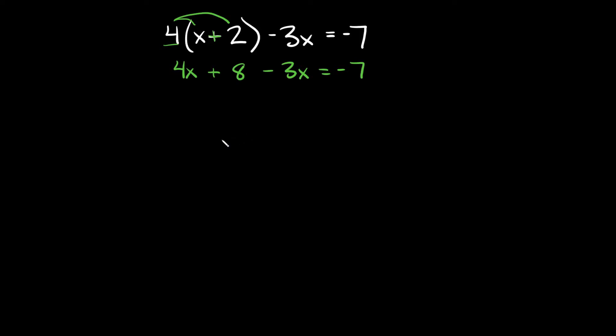Now the next thing you're going to do is combine like terms. So I'm going to rewrite this a little bit so it's a little easier to see. So here we have four x and then we have this minus three x.